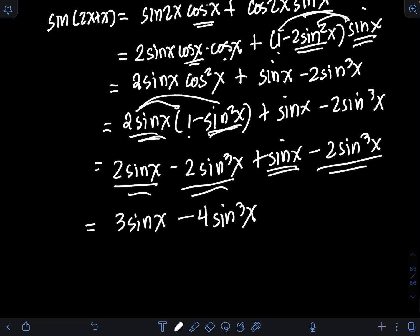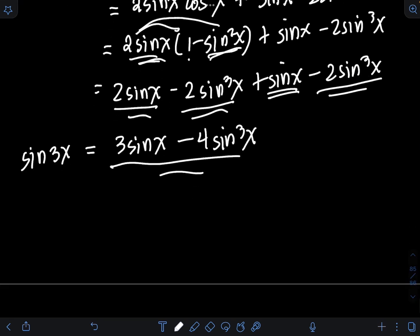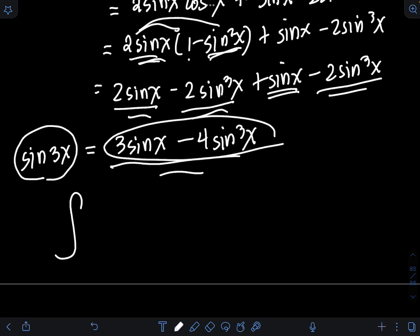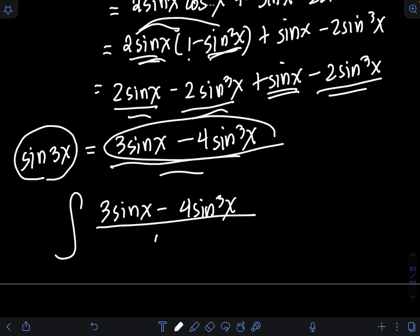Therefore the equivalent form is sin3x = 3sinx − 4sin³x. Substituting this into the original integral, we have the integral of (3sinx − 4sin³x) over sinx dx.